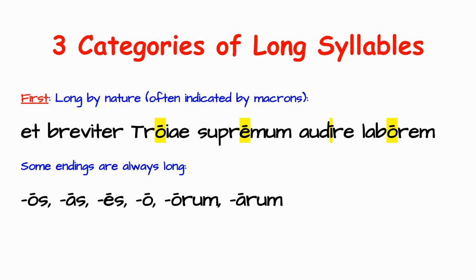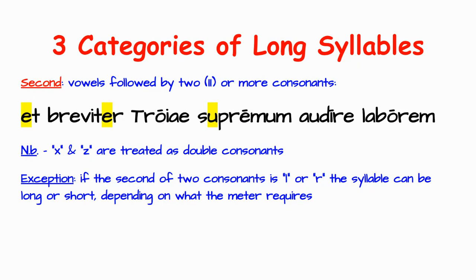Accusative plural endings: -os, -ēs. Because if a word of any sort ends in O, that O is always going to be long. The genitive plural endings are -ōrum and -ārum. There are other endings that are normally long too. Those syllables long by nature are always long.